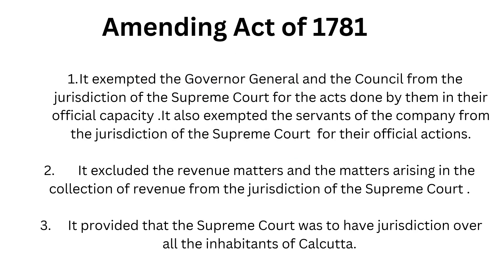The next important act and the last act for today's class will be the Amending Act of 1781. The Amending Act of 1781 was passed to rectify the defects seen in the Regulating Act of 1773. This act was passed by the British Parliament and has another name: the Act of Settlement. Remember this — Act of Settlement is the other name for this act. Now let us look at the important features. It exempted the Governor General and the Council from the jurisdiction of the Supreme Court for acts done by them in their official capacity.